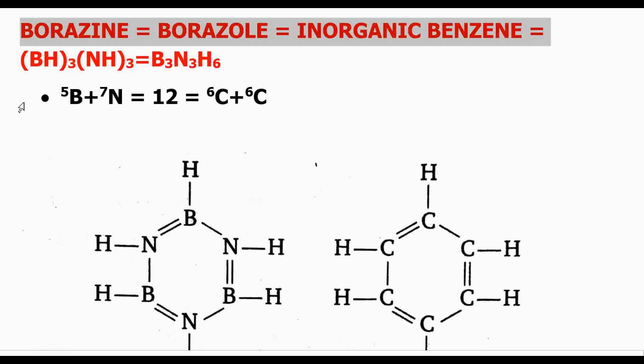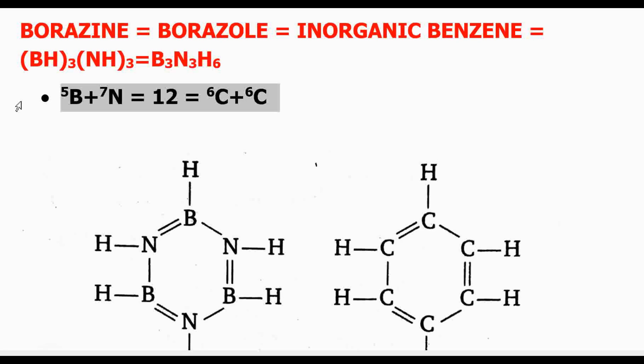Let us try to understand and compare the B-N bond with a C-C bond, first in terms of electrons. The atomic number of boron is 5, so it has 5 electrons. The atomic number of carbon is 6, it has 6 electrons. The atomic number of nitrogen is 7, it has 7 electrons. If I add boron and nitrogen, that is 5 plus 7 which equals 12 — the same as the addition of 2 carbons, 6 plus 6, which is also 12. This is called an isoelectronic situation. This gives rise to some interesting properties in borazine which are very near to those of benzene, and that is why borazine is also known as inorganic benzene.